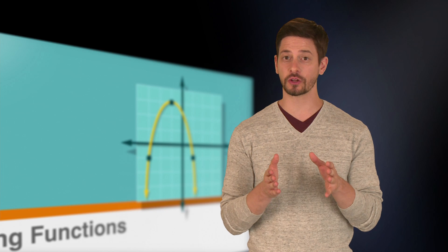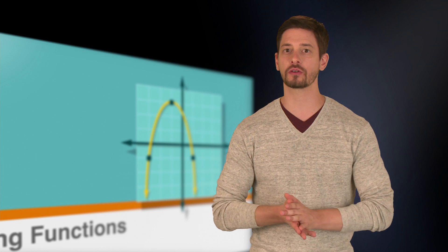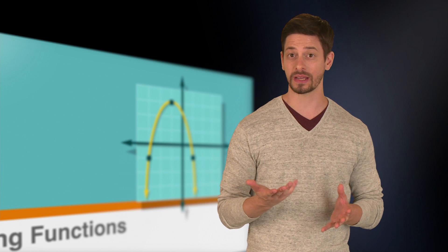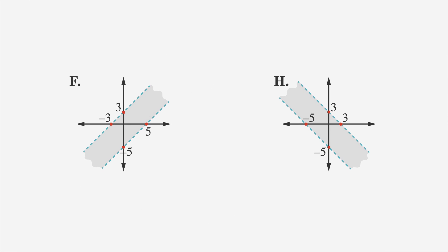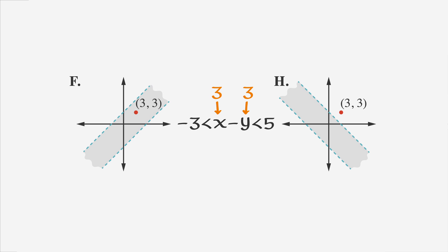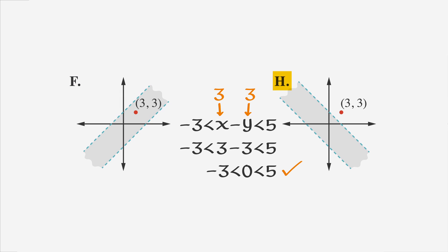We're left with two potential answer choices: F and H. Let's pick another set of numbers to find a point that works for one choice but not the other, because every point on the graph must satisfy the function. Let's try point (3, 3) — it's in the shaded region of F, but not in the shaded region of H. If we put 3 in for x and 3 in for y, the inequality becomes negative 3 is less than 3 minus 3, which is less than 5. Working it out, this becomes negative 3 is less than 0, which is less than 5. That's true. So point (3, 3) works in the inequality and must be in the shaded region of the correct answer. Point (3, 3) is in the shaded region on choice F, but not on choice H, so the correct answer is F.